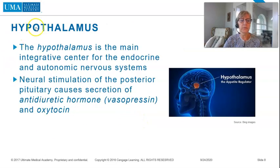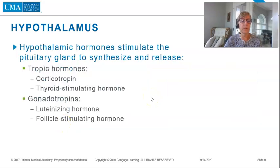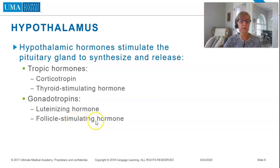The hypothalamus is the main integrative center for the endocrine and autonomic nervous system. Neural stimulation of the posterior pituitary causes secretion of antidiuretic hormone, vasopressin, and oxytocin. Hypothalamic hormones stimulate the pituitary gland to synthesize and release tropic hormones: corticotropin, thyroid stimulating hormone, and gonadotropins including luteinizing hormone and follicle stimulating hormone.